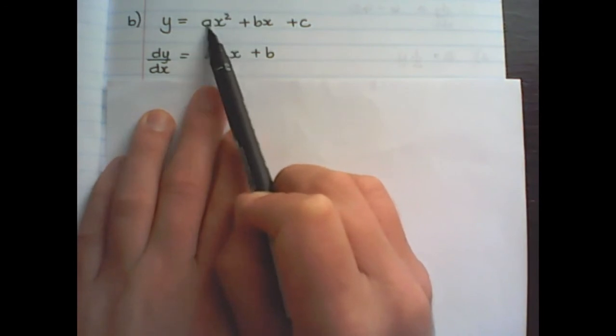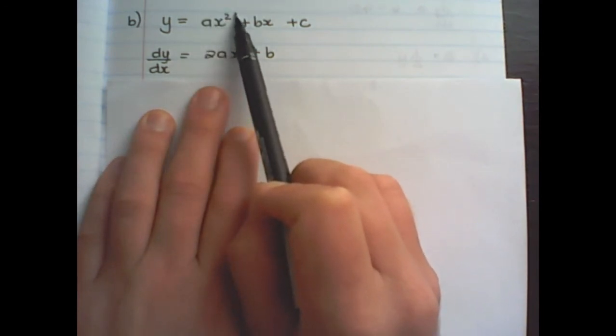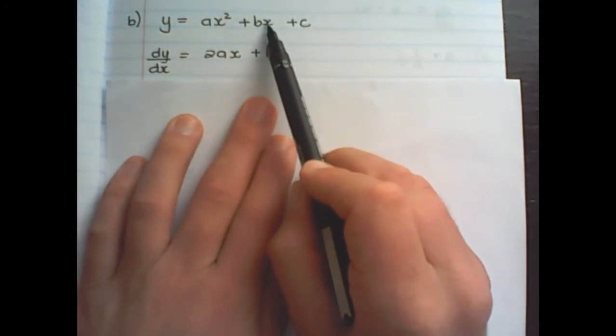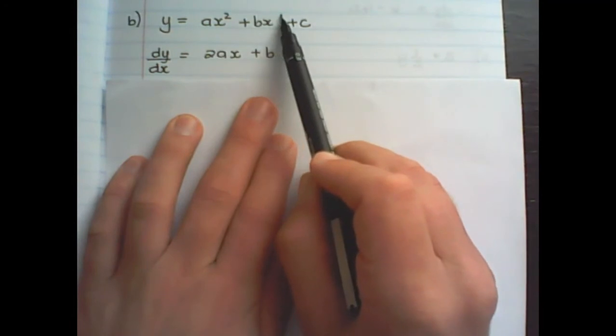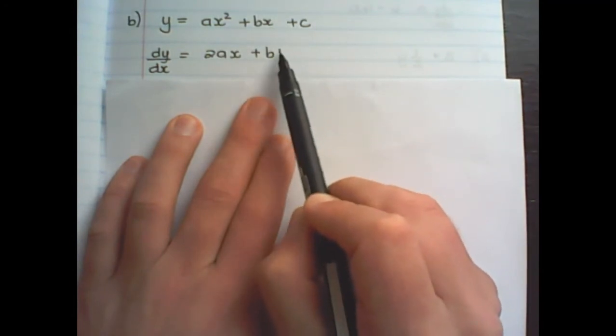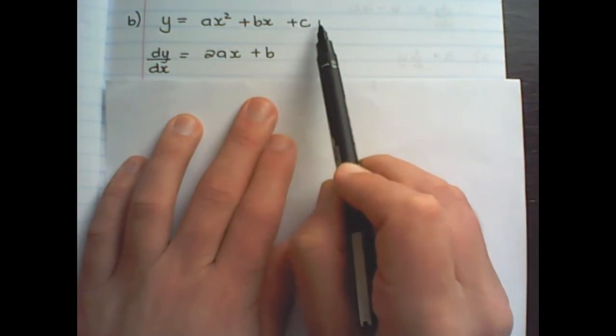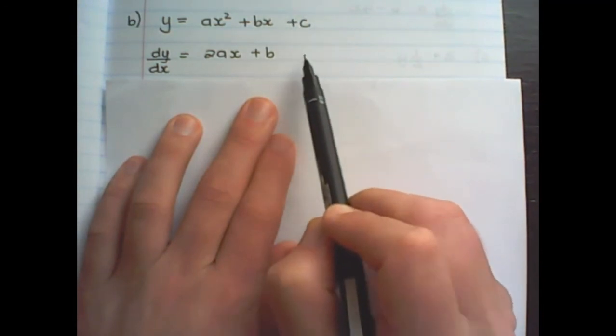So a is multiplied with the exponent of 2 and in the exponent I have 2 minus 1 which is 1, x to the power of 0 which becomes 1. c doesn't have any x's and therefore it falls away.